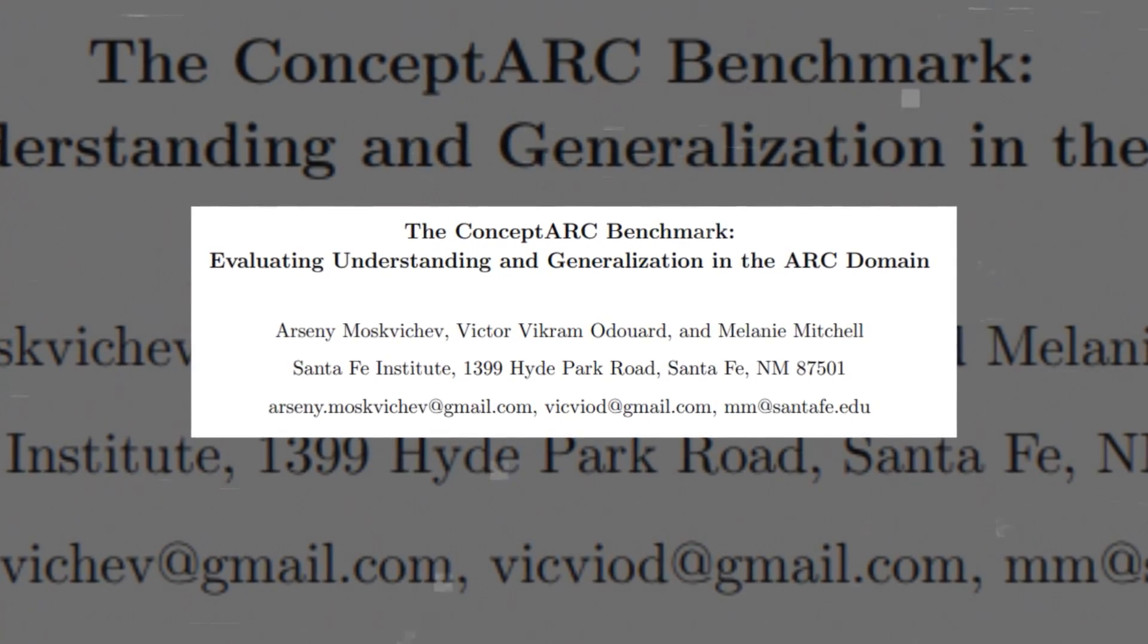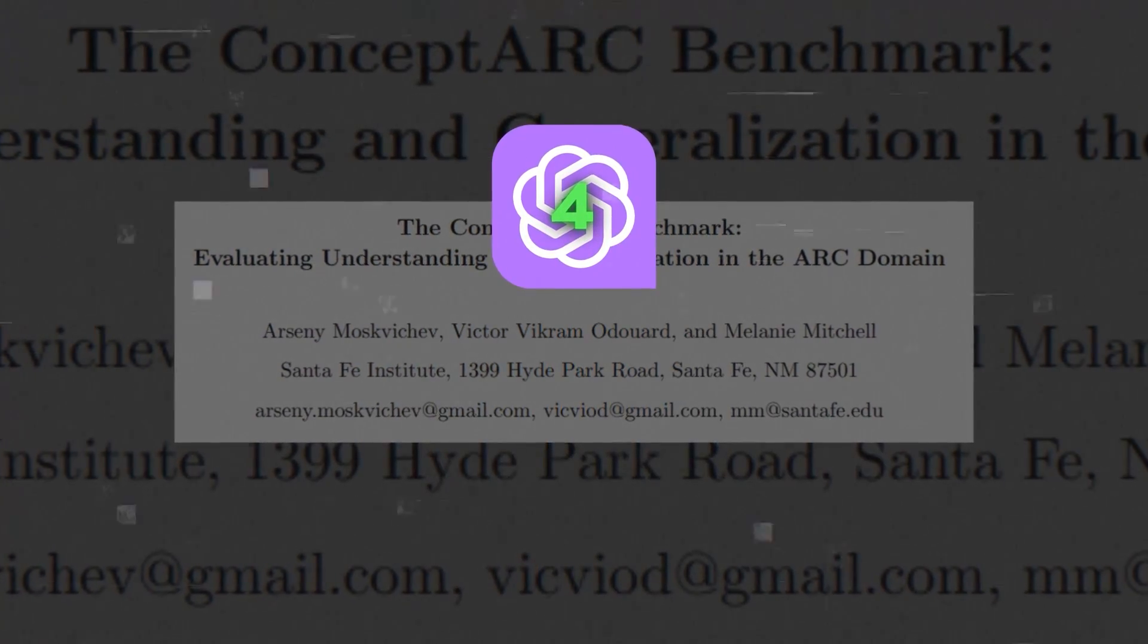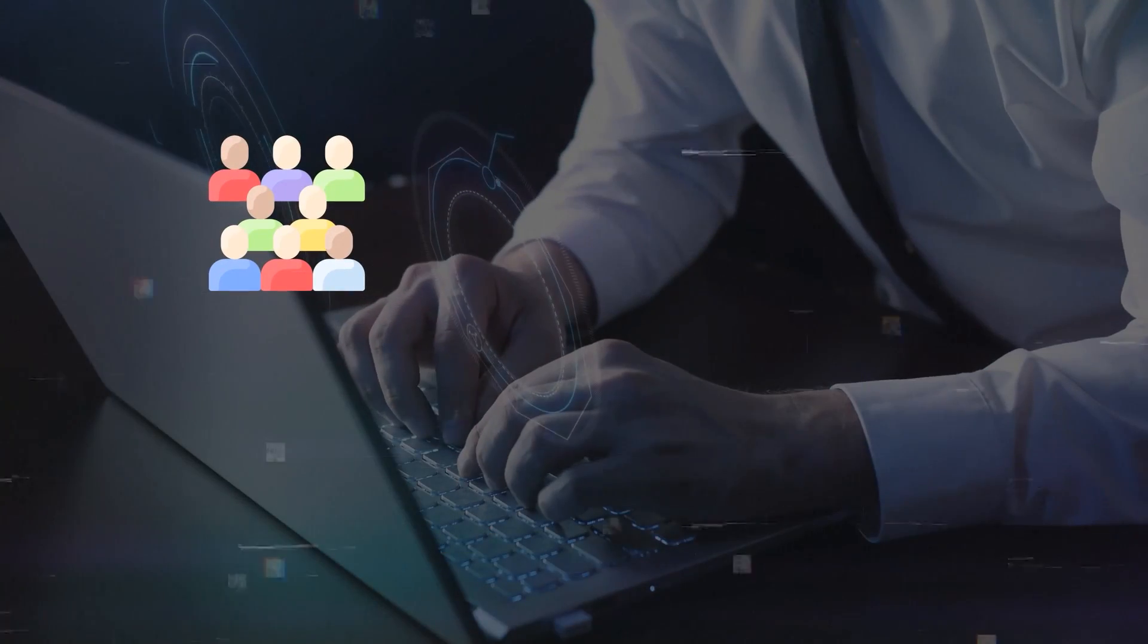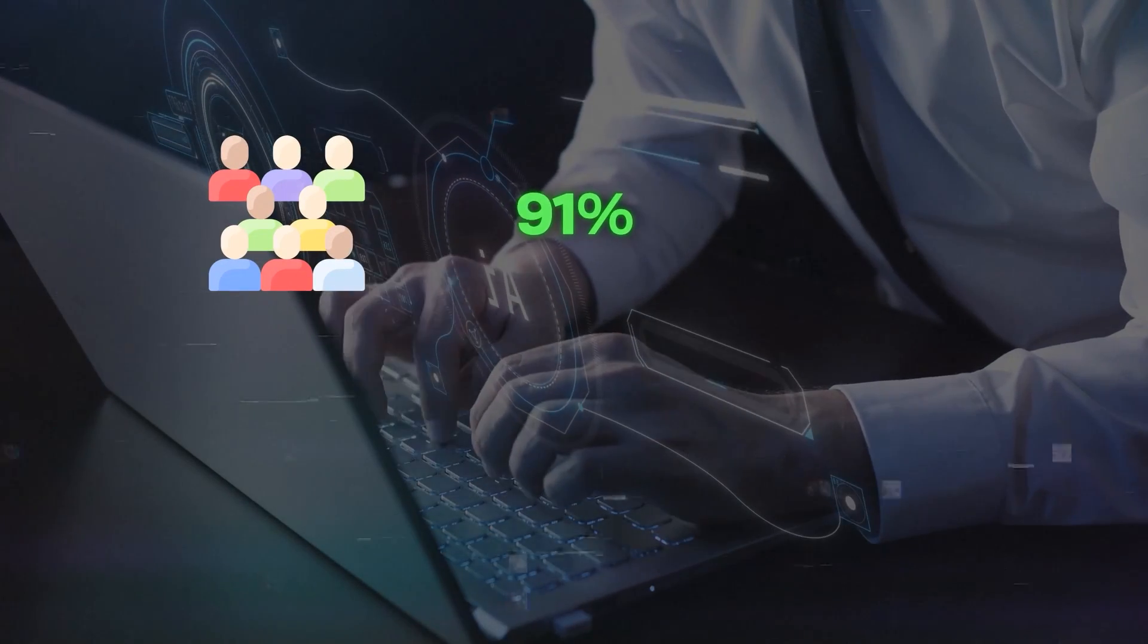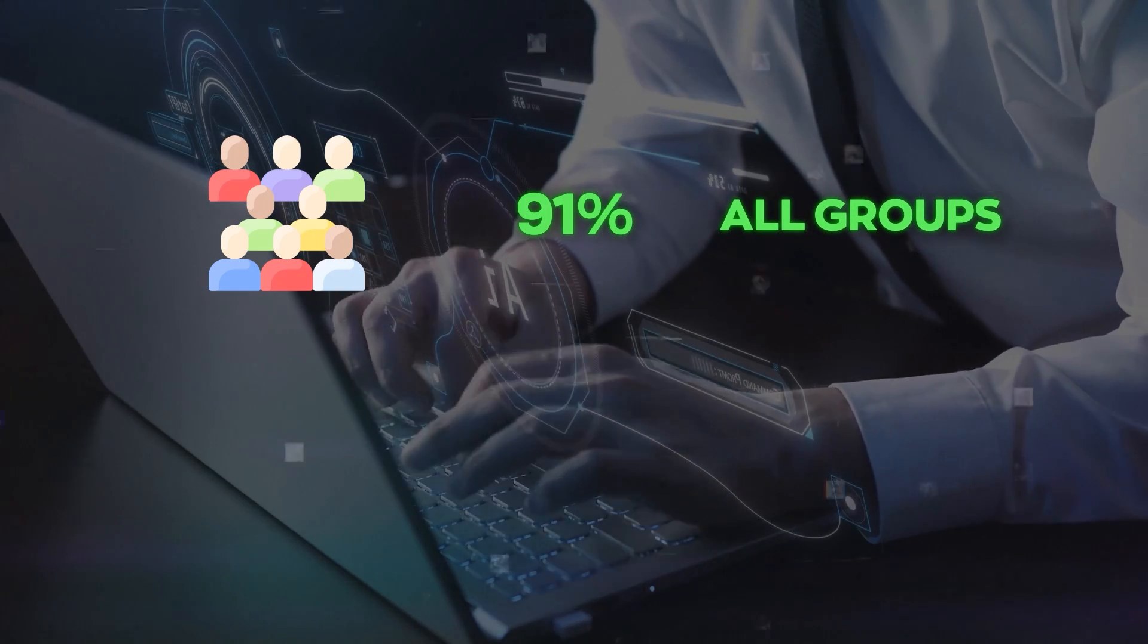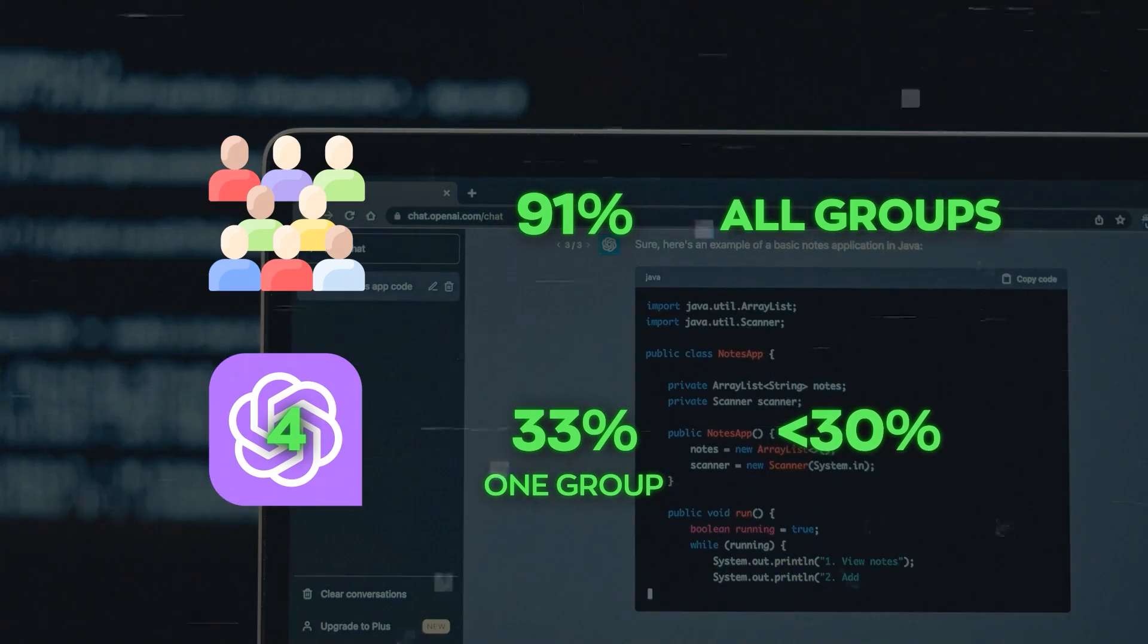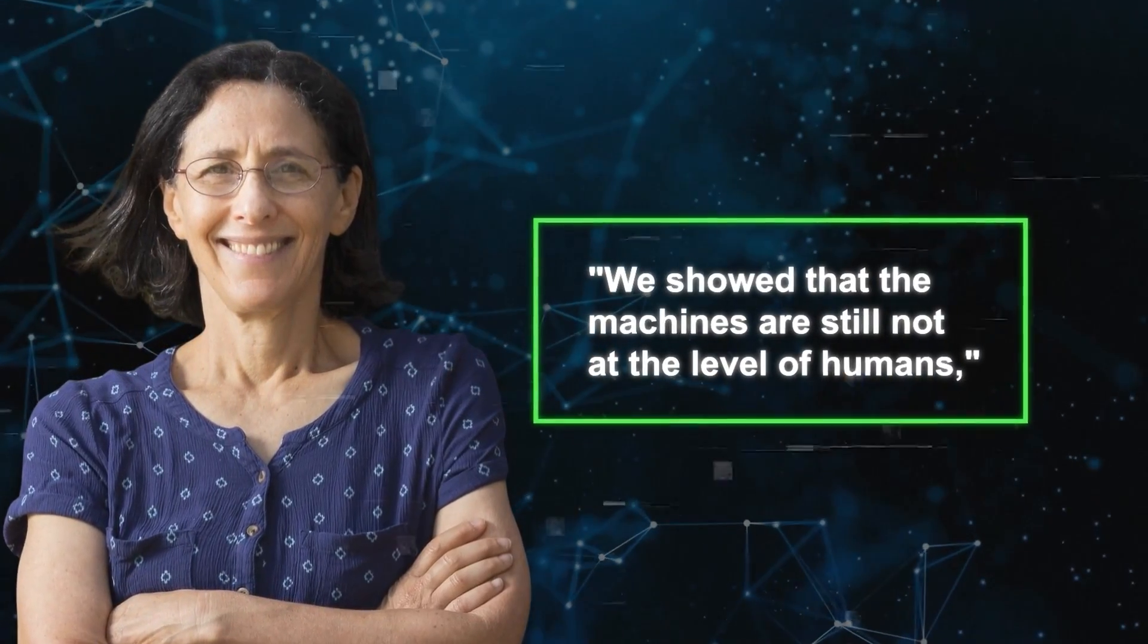The researchers then presented these Concept ARC tasks to GPT-4 and to 400 people they found online. The human participants scored on average 91% on all concept groups. GPT-4 only scored 33% on one group and less than 30% on all the others. 'We showed that the machines are still not at the level of humans,' Mitchell said.